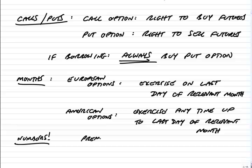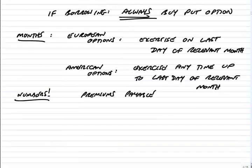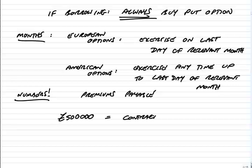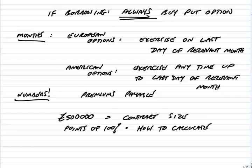The numbers in the columns are the premiums — the premiums payable — although how we actually use those numbers, I'll show you when we do a full example. As for sterling options 500,000 points of 100%, the 500,000 is the contract size. You'll always be told the contract size, and you'll have to trade in fixed-size contracts. The 'points of 100%' is telling us how we actually calculate the premium, which I'll show you shortly.